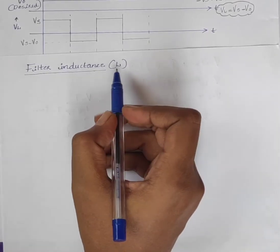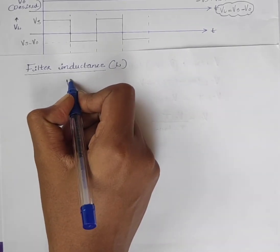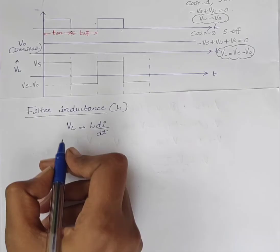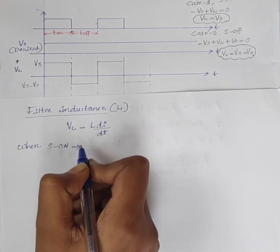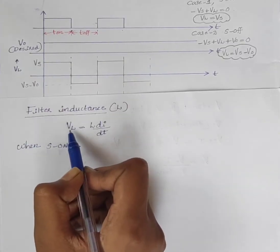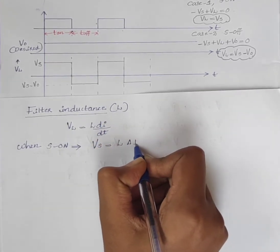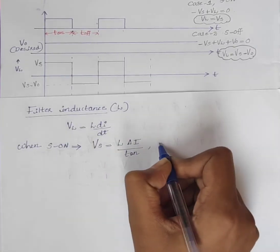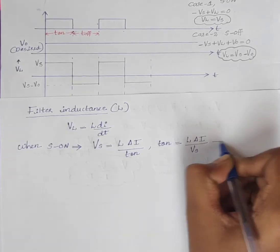Next, we derive the expression for filter inductance L. We know that for an inductor, the induced voltage Vl equals L·dI/dt. Considering case 1, when the switch is on, Vl equals Vs. So: Vs = L·ΔI / T on. Therefore, T on = L·ΔI / Vs — equation 1.